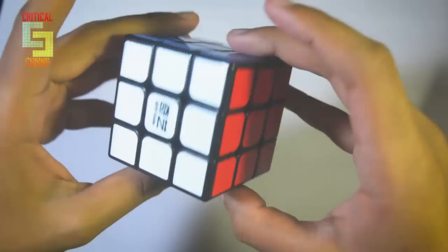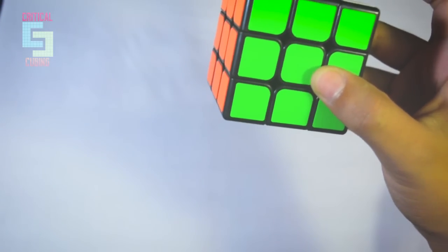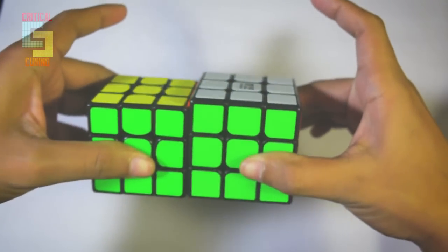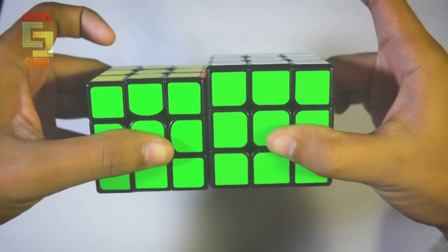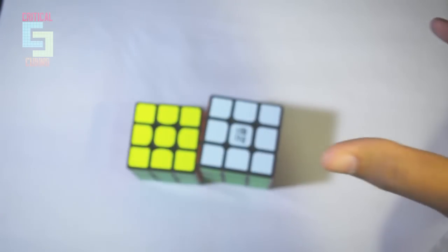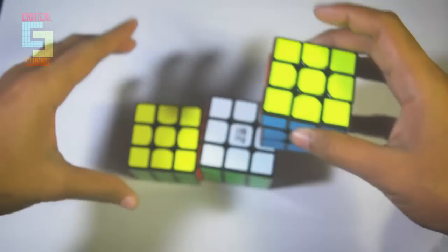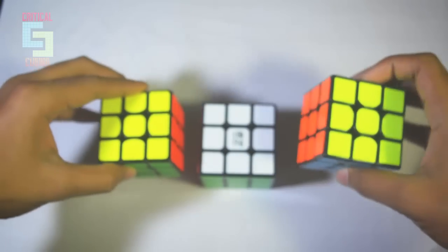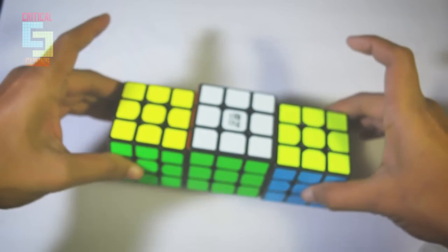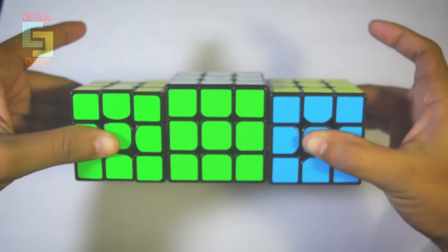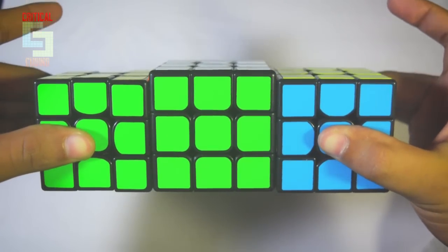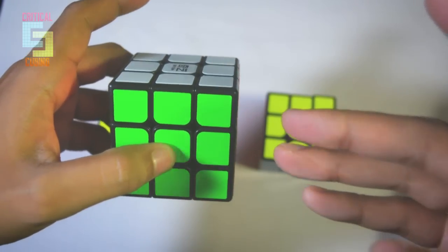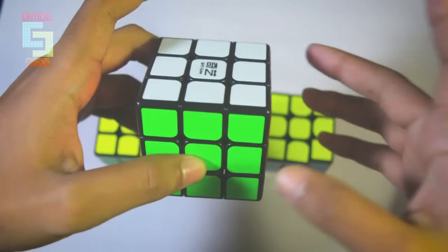It actually feels a bit bigger than normal cubes. So I have my Valk3 here for comparison and Valk3 is like that much, and I also have the MF3 RS for comparison. So MF3 RS is 56mm and the Valk3 is 55.5mm. So yeah, these are the differences. It's not that huge of a difference but you can definitely see that this cube is a bit bigger than the other 3x3 cubes at a first glance.